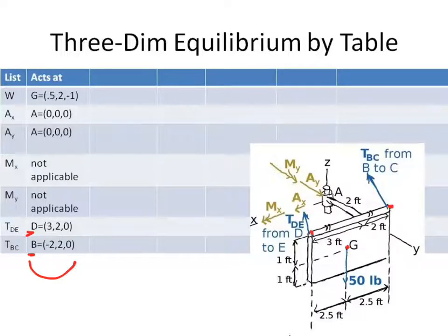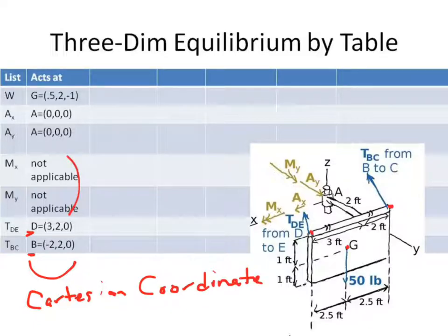Now, what I'm looking for here are the actual Cartesian points. So what is the Cartesian coordinate for where these forces act? Now, when you talk about a moment, it's not applicable, because a moment is a free vector. And within the object that you're looking at, you can slide those moments anywhere they'd like.